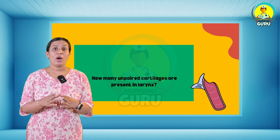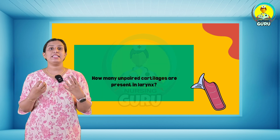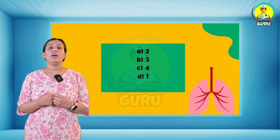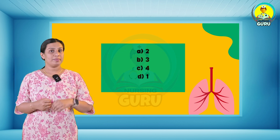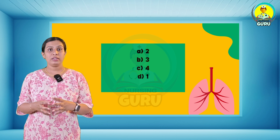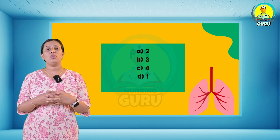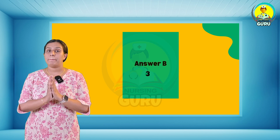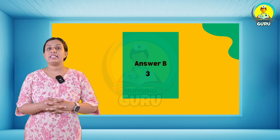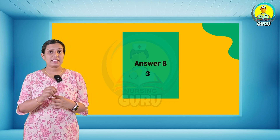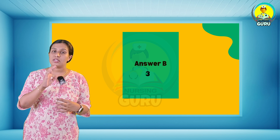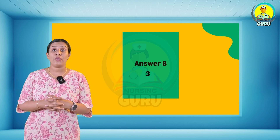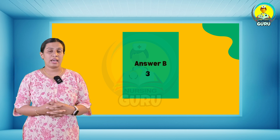Sixth question: how many unpaired cartilages are present in the larynx? The options are 2, 3, 4, and 1. The right answer is option B — 3. The skeleton of the larynx consists of 3 unpaired midline cartilages and 4 pairs of smaller cartilages.